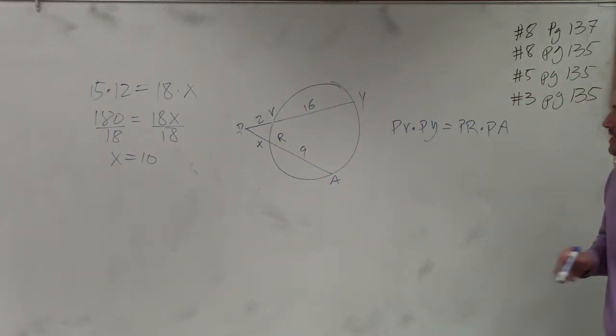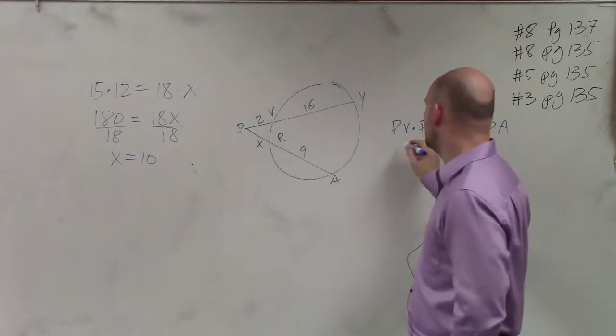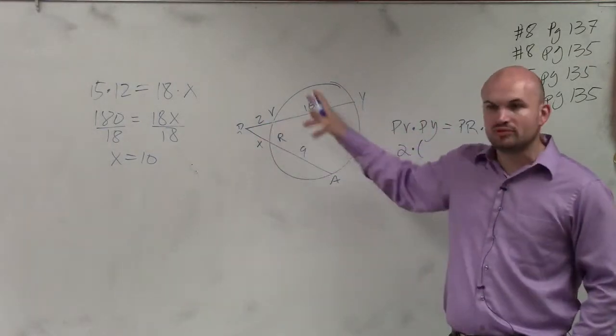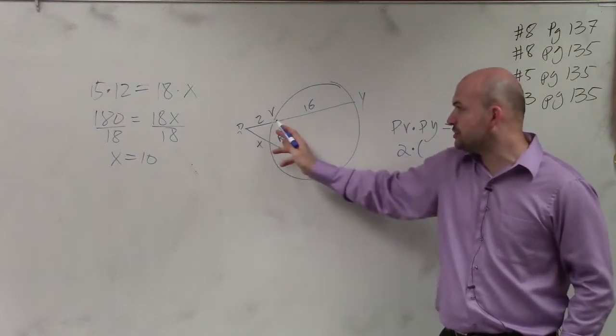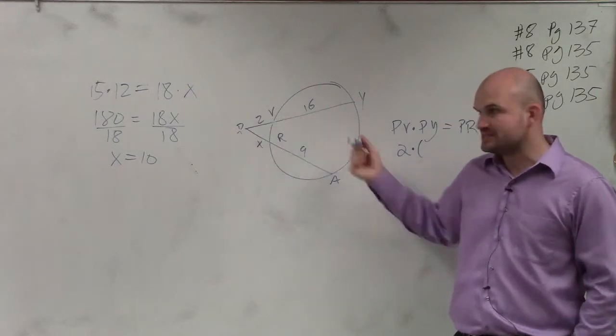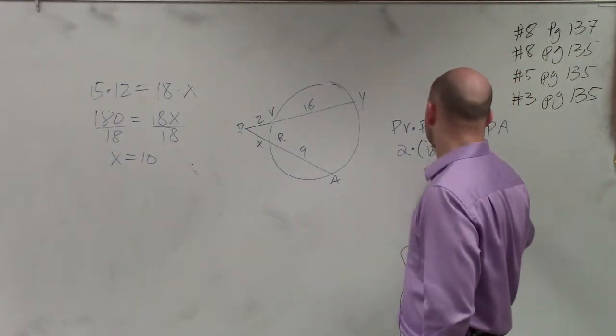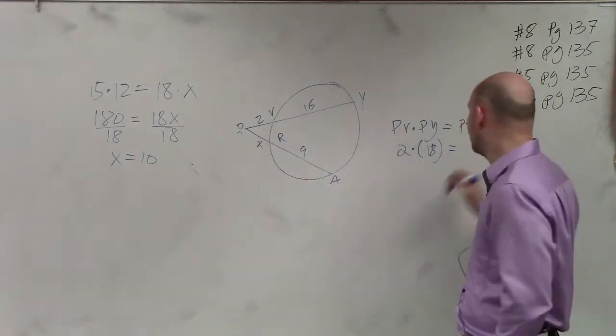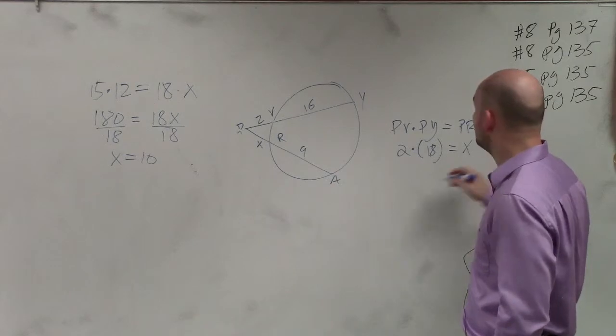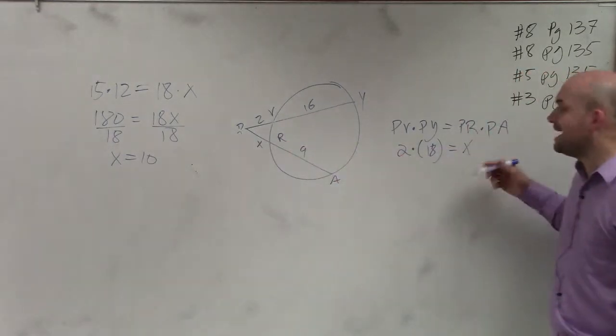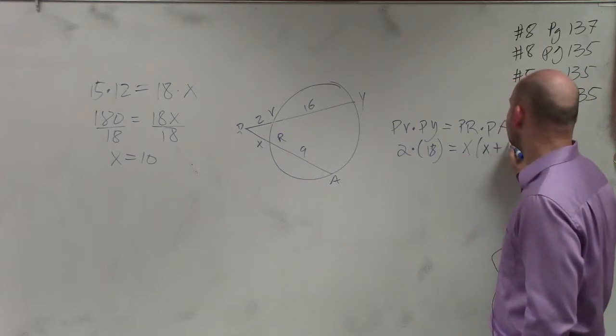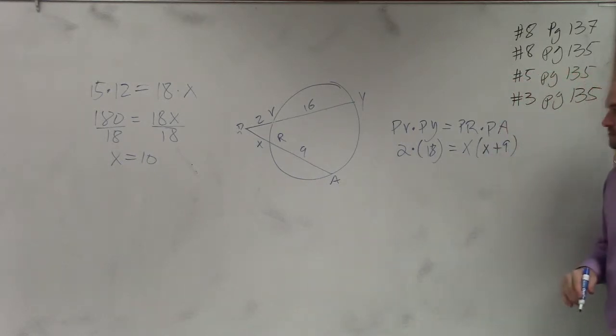So now I just plug in that information that I have. P to V is 2 times P to Y is going to be 2 plus 16, right? If here is 2 and here is 16, 2 plus 16 is 18, equals to PR, which is our variable X, which we're not provided or not provided the value of, and then P to A, which would be X plus A, or X plus 9. Correct?